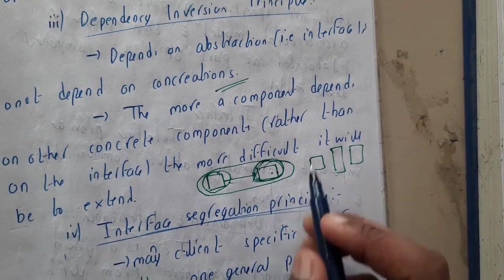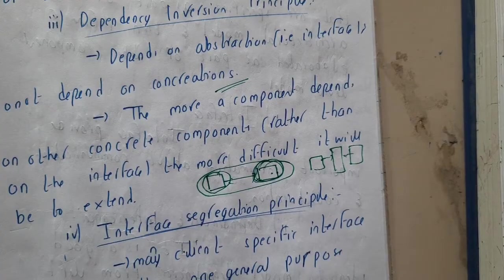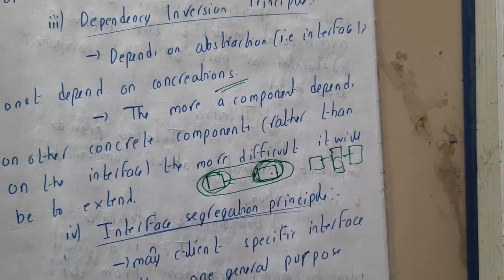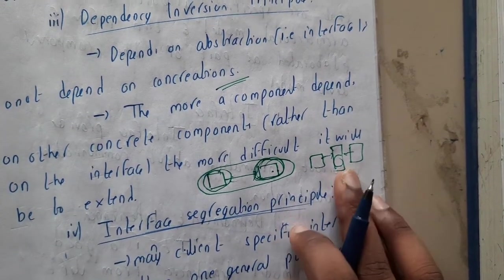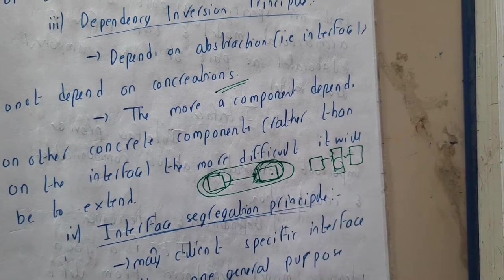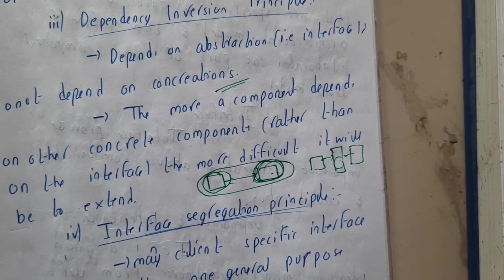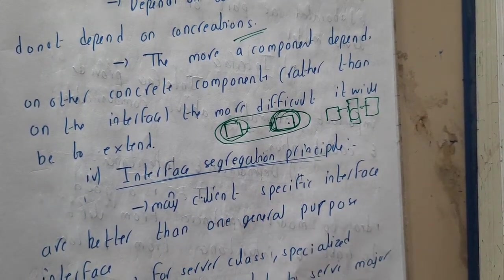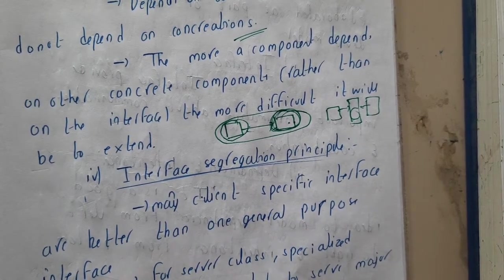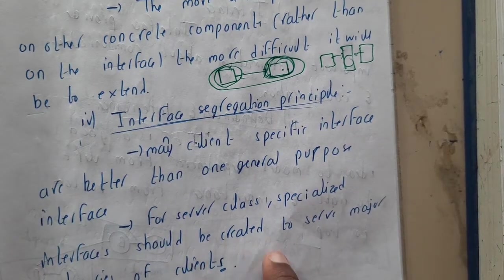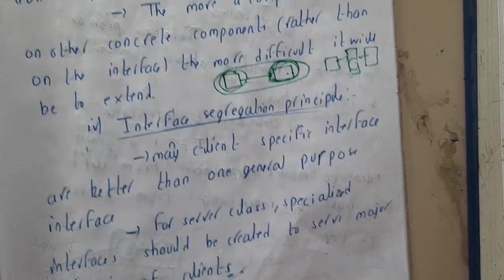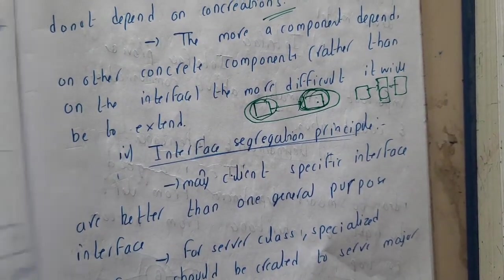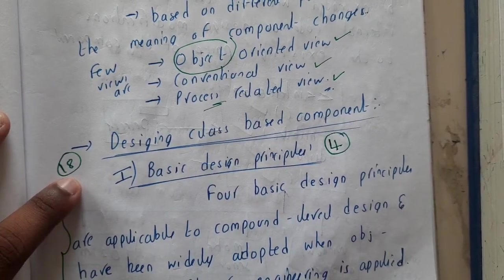The interface, acting as a broker, simply transfers data — it has inputs and outputs and does not perform any operations itself. You write the function names inside the interface, and it transfers data to and from. The fourth principle is the Interface Segregation Principle: many client-specific interfaces are better than one general-purpose interface. Specialized interfaces should be created to serve major categories of clients. You should create multiple interfaces rather than one.